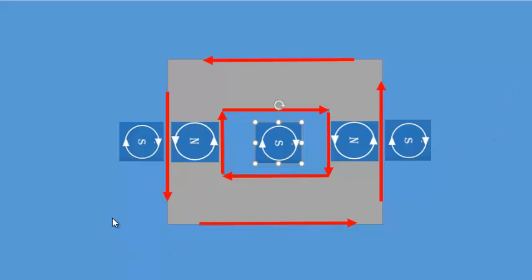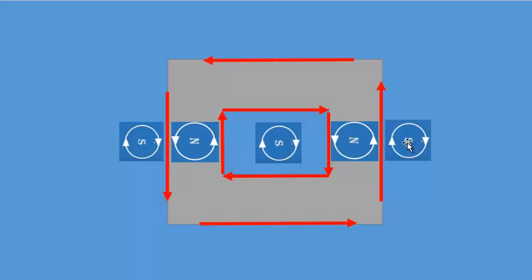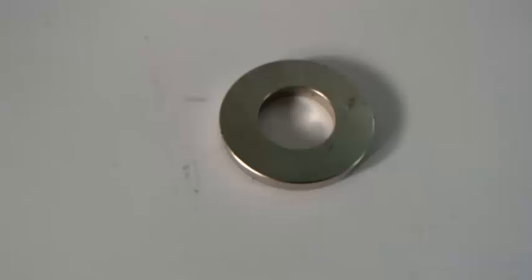With a ring magnet, the model predicts: where the magnet is, it will show north; where the magnet isn't — outside the outer edge and in the middle hole — it will show south. So the prediction is: south on the outer edge, north in the bulk of the magnet, south in the middle hole, north in the bulk again, and south on the far outside. That's what this model predicts we're going to see. Let's have a look.